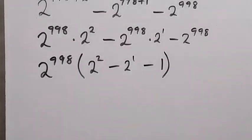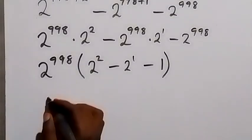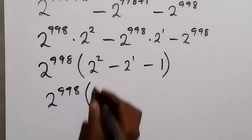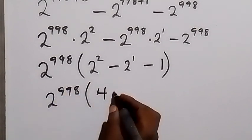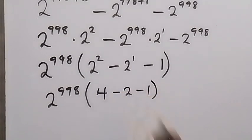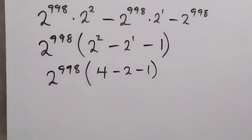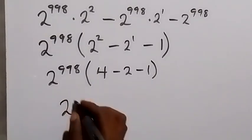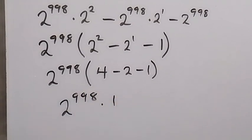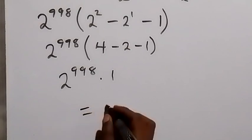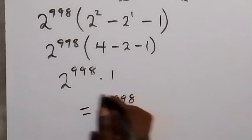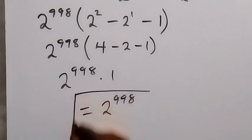From here we can rewrite this as 2 raised to power 998 into bracket: 2 squared, that's 4, minus 2 minus 1. And 4 minus 2, that's 2, then minus 1, that's 1. So we have 2 raised to power 998 times 1. And therefore we can see this is just 2 raised to power 998, and we have the simplified form to this expression.